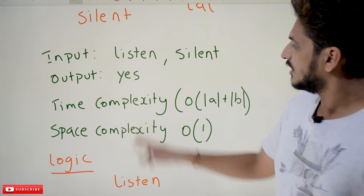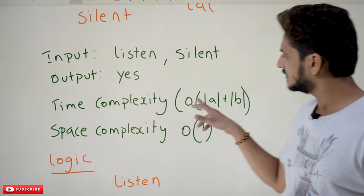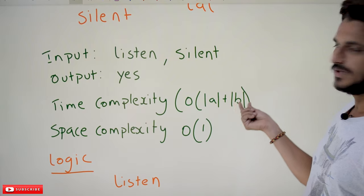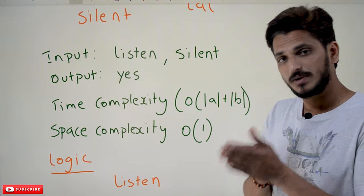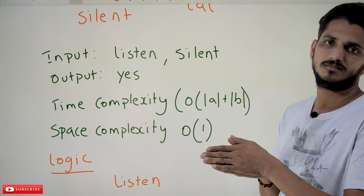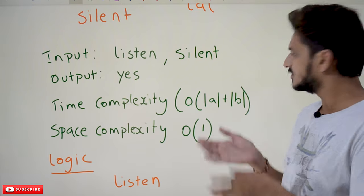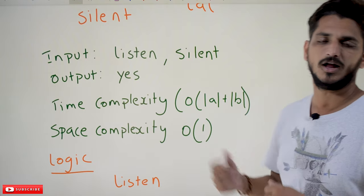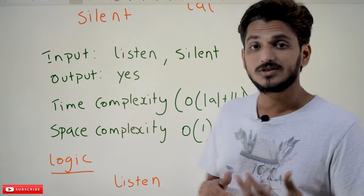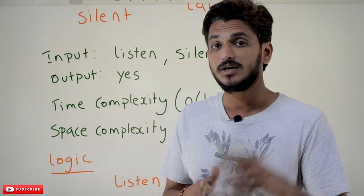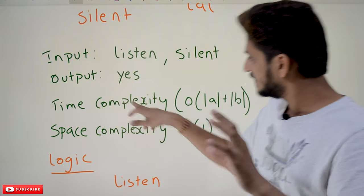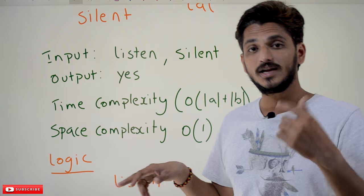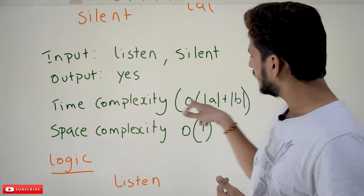The important thing here is you have to maintain the time complexity of O(a+b), where A is the number of characters in string A and B is the number of characters in string B. The space complexity should be O(1). Writing the logic is easy, but to maintain this time complexity you need to identify a new technique.